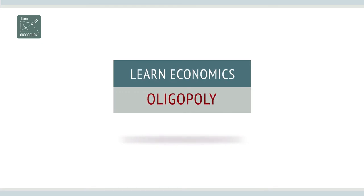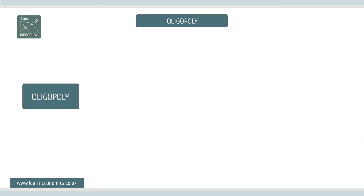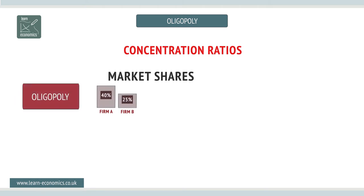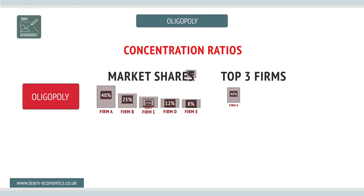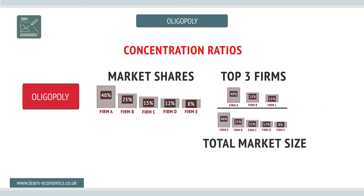Oligopoly and the kinked demand curve. An oligopolist is a firm in a market with only a few close competitors. Concentration ratios, or CRs, can be used to help identify whether a firm operates under conditions of oligopoly. Here, the three-firm CR is 80%, indicating oligopoly conditions.